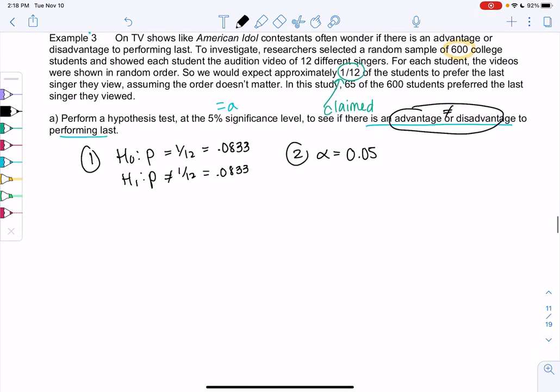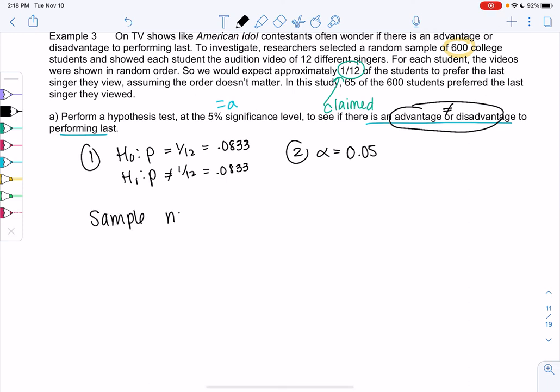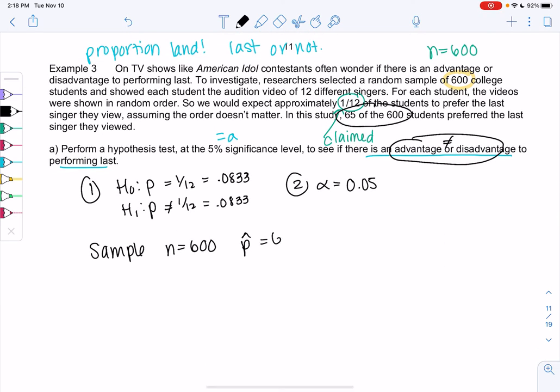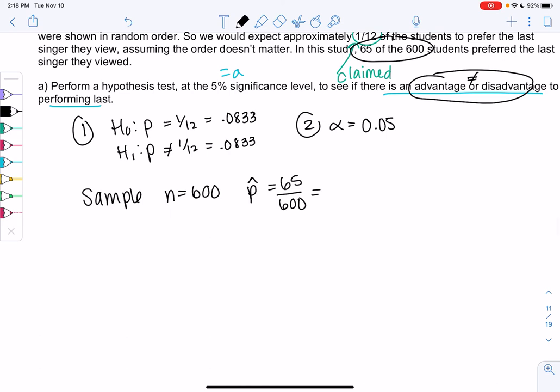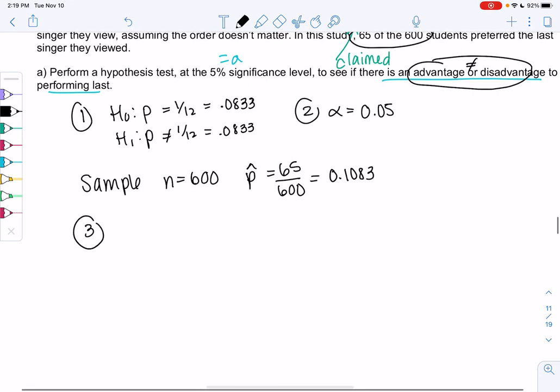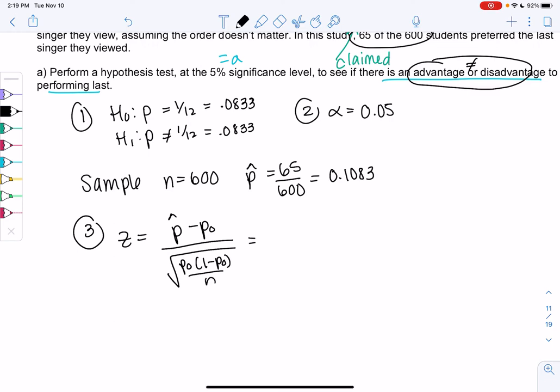So an advantage would be more than 8%, right? And a disadvantage would be less than 8%. So it could be either, so it's not equal. And then we go ahead and state alpha, which is 0.05. That'll be our cutoff. And so let's go ahead and investigate. Okay, so my sample tells me that N is 600. P hat will be the 65 out of 600. Go ahead and divide. I get 0.1083. So it's a little bit bigger than 0.0833. But we'll have to investigate with z-scores and p-values to decide if it's different enough. So step three, let's go ahead and find the z-score.